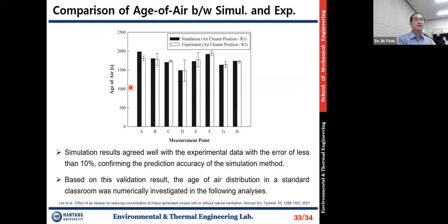After waiting about 10 minutes after turning off the fans, the air cleaner was turned on and measurement of particle number concentration began using OPCs at different local locations. The experimental data at a local point shows an exponential decay of normalized particle concentration. This data is fitted to the equation to determine tau_p, the age of air experimentally. The comparison of age of air between simulation and experiment at eight different locations showed agreement with error less than 10%, confirming high prediction accuracy.